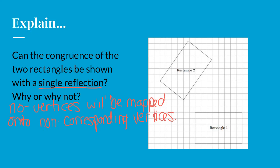So here's my answer. I say no. And the reason I say no is that the vertices will be mapped onto non-corresponding vertices. By definition, a reflection is going to give you a mirror image. And so those vertices will be mirror images of themselves and never mapped correctly.